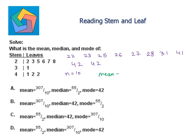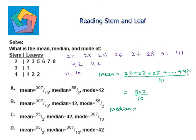The mean equals 22 + 23 + 25 and so on up to 42, divided by 10. The sum is 307, so the mean is 307/10. The median: the two middle values are 27 and 28, so the median is (27 + 28) / 2 = 55/2. The mode is 42, since 42 is repeated most. So mean is 307/10, median is 55/2, and mode is 42.